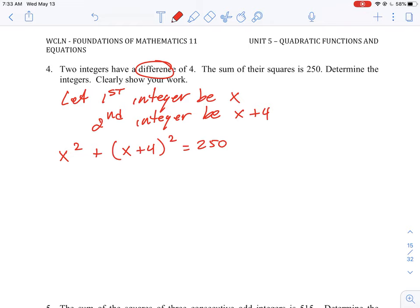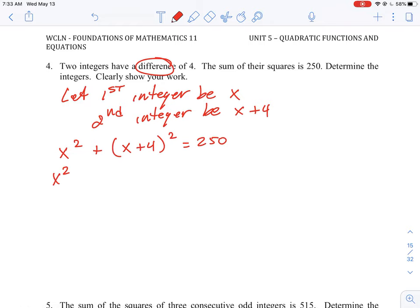Okay, and then out of that, we can simply just do an expansion where we're going to get x squared plus x squared plus 8x plus 16 is equal to 250. And then we can collect terms together. So that will give us 2x squared plus 8x minus 234 is equal to zero.